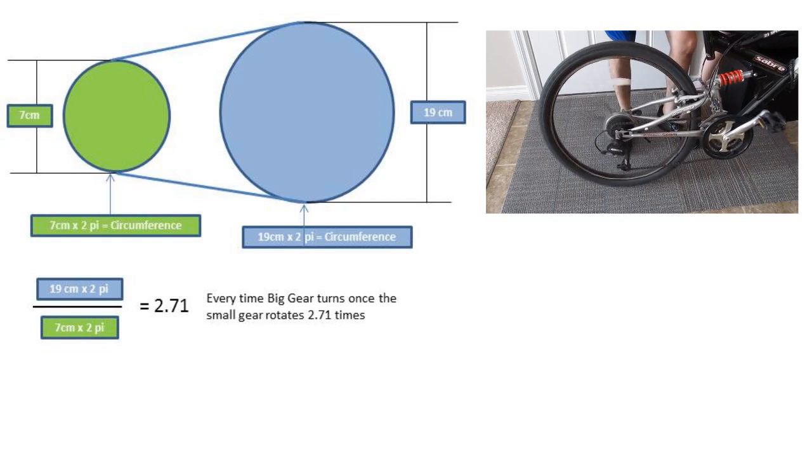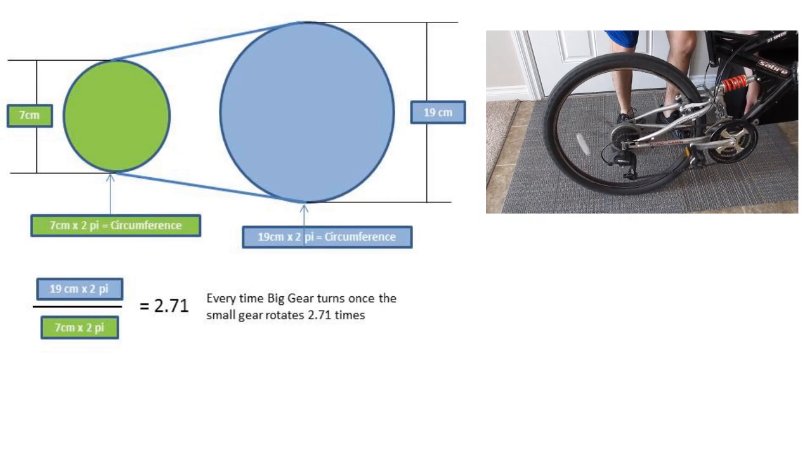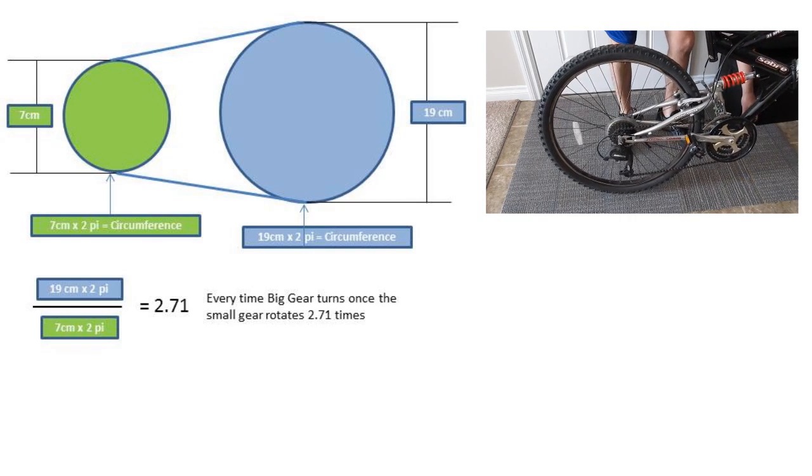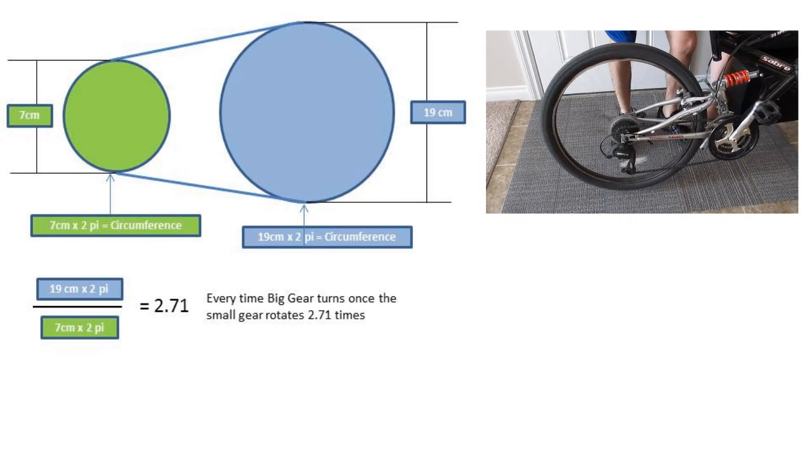In this case we get a gear ratio of about 2.71. This means that every time the big gear turns once the small gear turns 2.71 times.